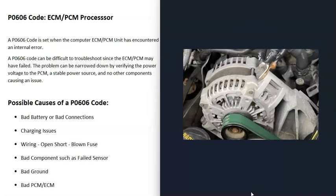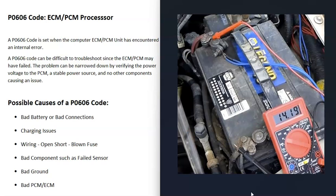The next thing that could cause this is some kind of issue with the alternator — either it's overcharging, undercharging, or something like that. A quick way to check this is to use a multimeter: start the engine and check the voltage at the battery terminals. The voltage should be between 13.5 and 14.5 volts. If it's under or over that range, there's an issue — the alternator or voltage regulator may have gone bad.